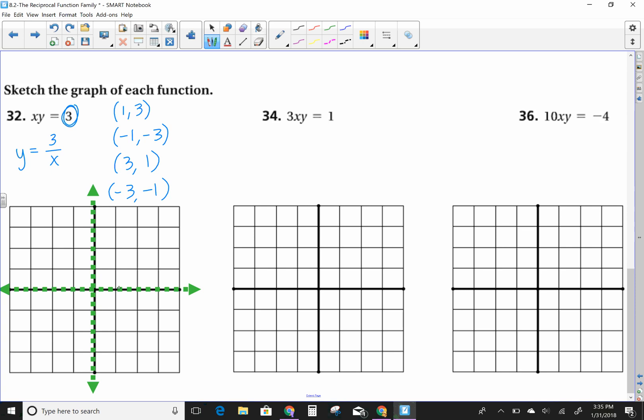So I'm going to go plot those points. I'm going to go over 1, up 3. Over 3, up 1. To the left, 1, down 3. To the left, 3, down 1. And then connect it to approach your asymptotes.